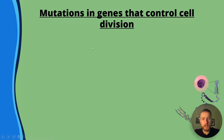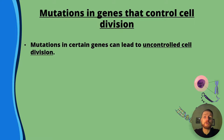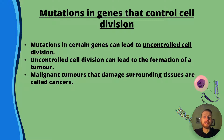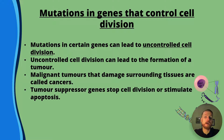Mutations in genes that control cell division are responsible for cancer. Mutations in certain genes can lead to uncontrolled cell division, and uncontrolled cell division can lead to the formation of a tumour. Malignant tumours that damage surrounding tissues are called cancers, but not all tumours are cancers.